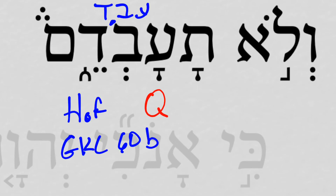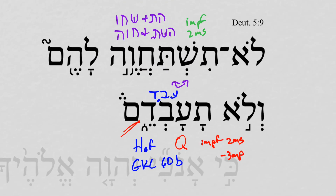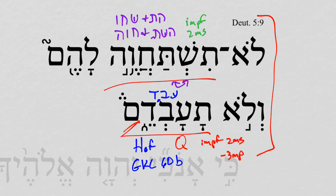But whatever it is, we can see clearly enough that it is an imperfect 2MS with a 3MP pronominal suffix — namely, 'you shall not serve them.' And it's possible, finally, to think in terms of this as a Hendiatus — namely, this may not be two separate actions, but bowing down may be the way that Israel is forbidden to serve the images.